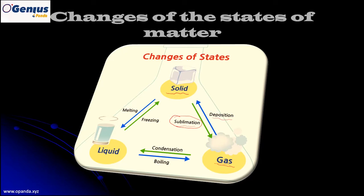We also know a process where a solid changes into a liquid. From solid to liquid, we call the process melting, and the reverse process is freezing. For example, when solid water — commonly called ice — changes into liquid water, that is melting. When liquid water changes into a solid, we say it is freezing.